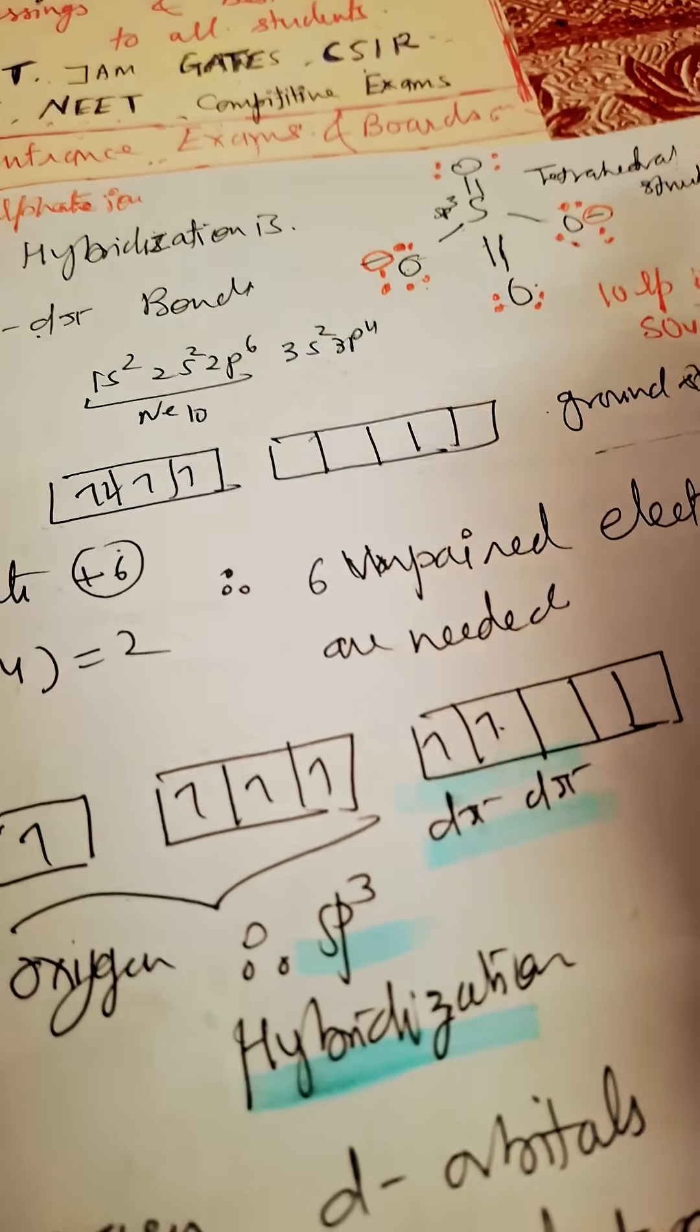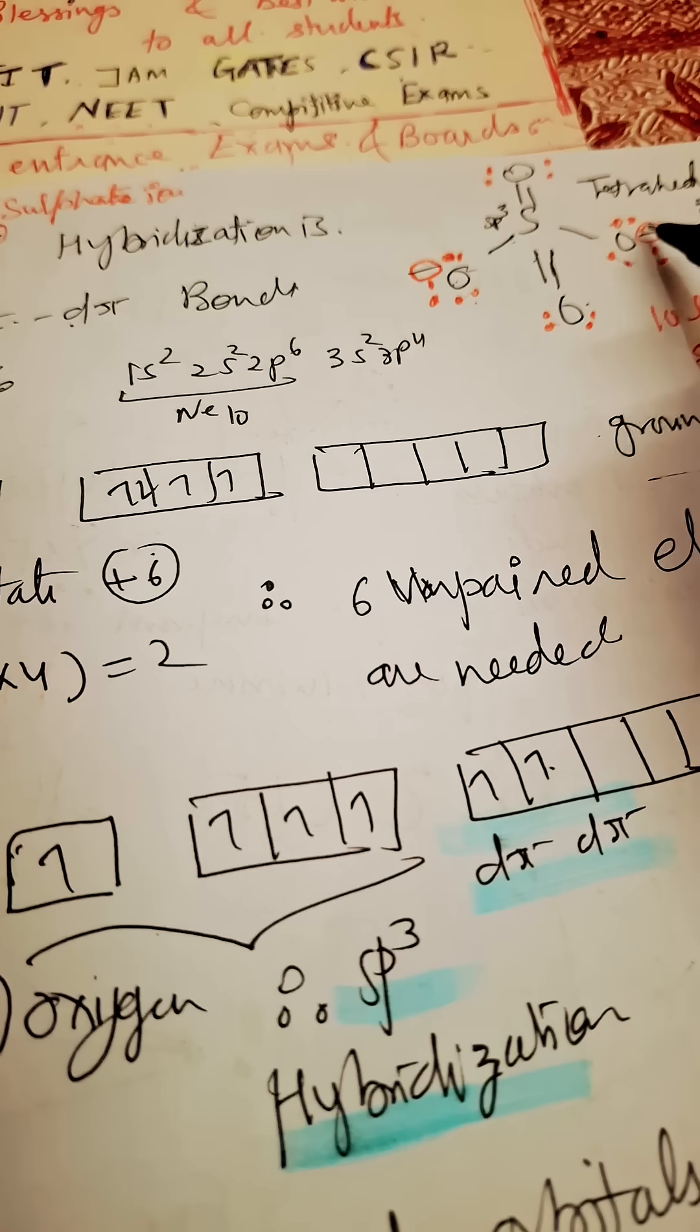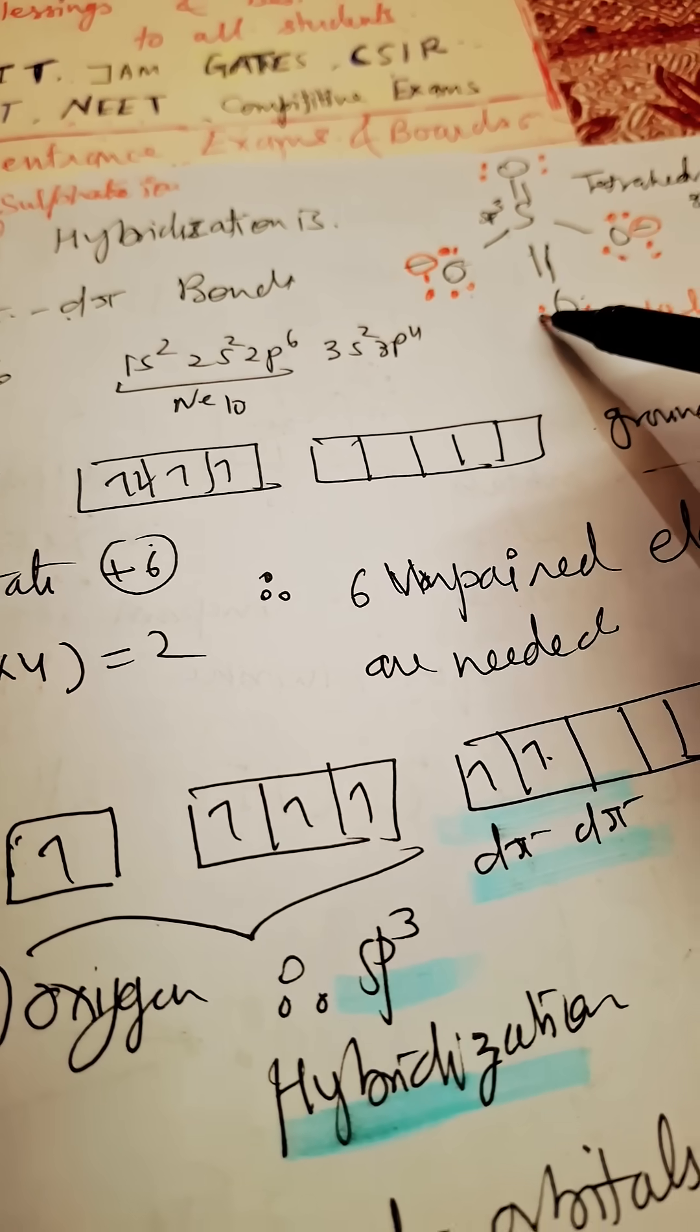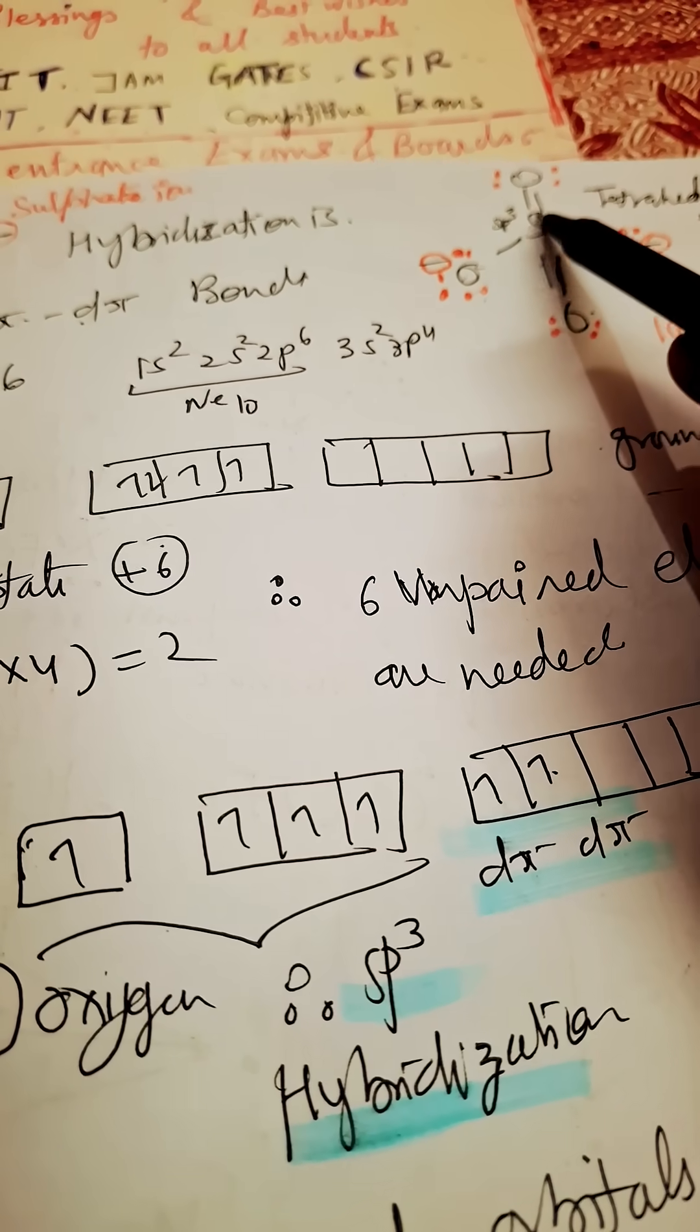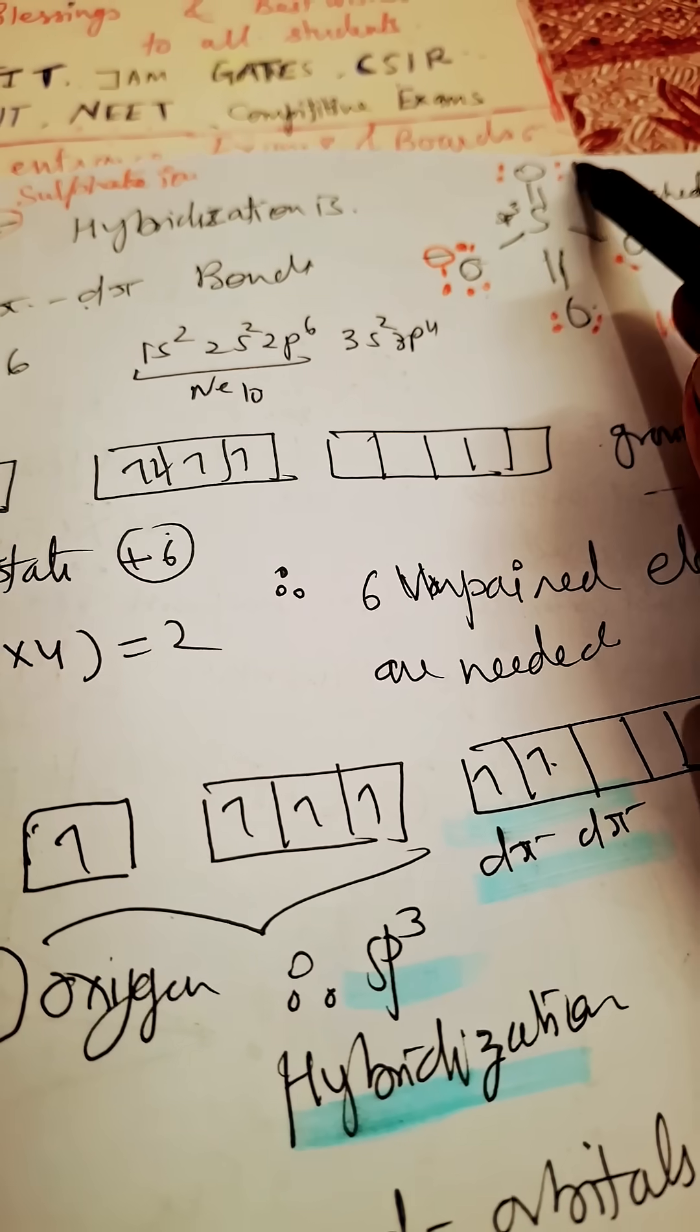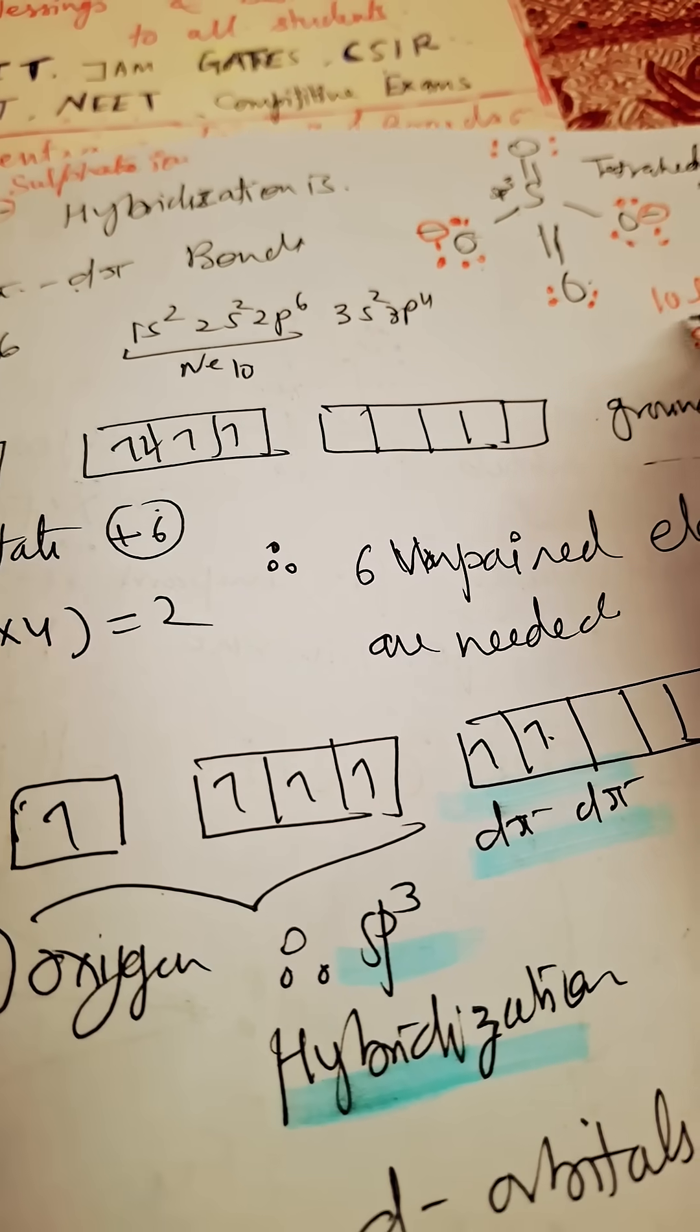...because two negatively charged oxygens are there. So three plus three: six, seven, eight, nine, ten. So one lone pair, one lone pair - two lone pairs on doubly bonded oxygen with sulfur. So total ten lone pairs.